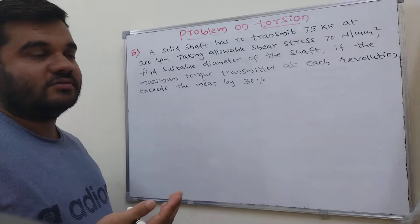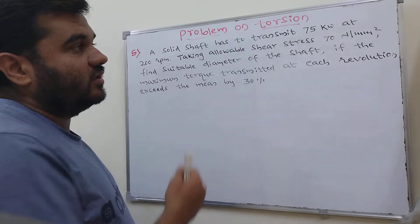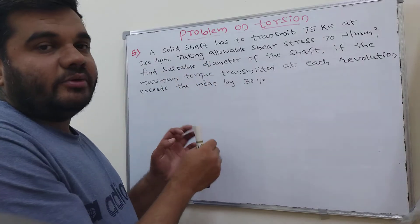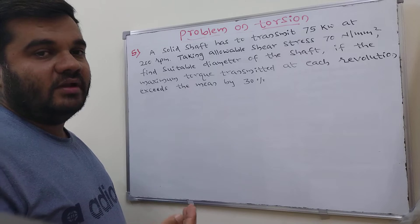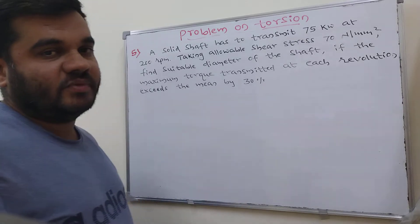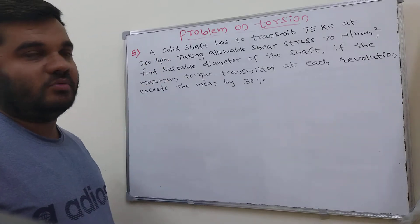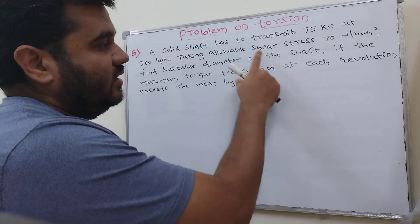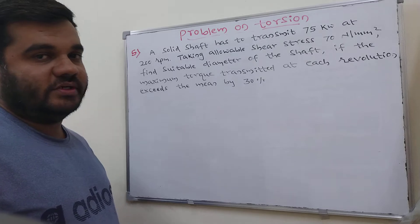Those problems are all in different varieties so that they will be helpful while solving problems related to the torsion chapter. Whatever we are solving here will be of a different type and different variety, and they will be helpful in competitive exams or university exams. This is one of the important problems here. First, I'll read the problem, analyze it, write the data, and then go for the solution.